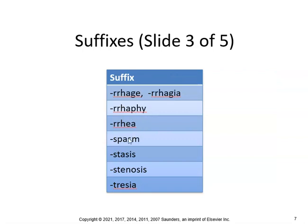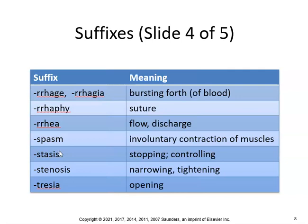Next suffixes: regia, raffi, rhea, spasm, stasis, stenosis, and trezia. Regia means burst forth of blood — for example, hemorrhage, or menorrhagia, which is heavy discharge of blood during menstruation.